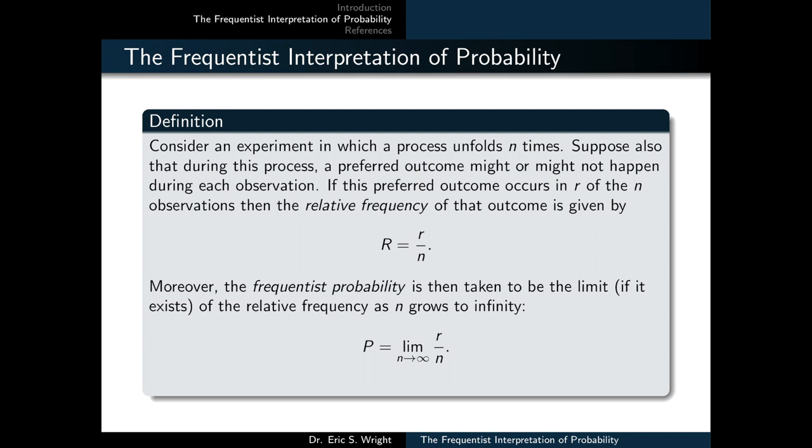We'll introduce the Frequentist Interpretation of Probability through its formal definition. Consider an experiment in which a process unfolds n times. Suppose also that during this process, a preferred outcome might or might not happen during each observation. If this preferred outcome occurs in r of the n observations, then the relative frequency of that outcome is given by r over n. Typically, we denote relative frequency with a capital R.